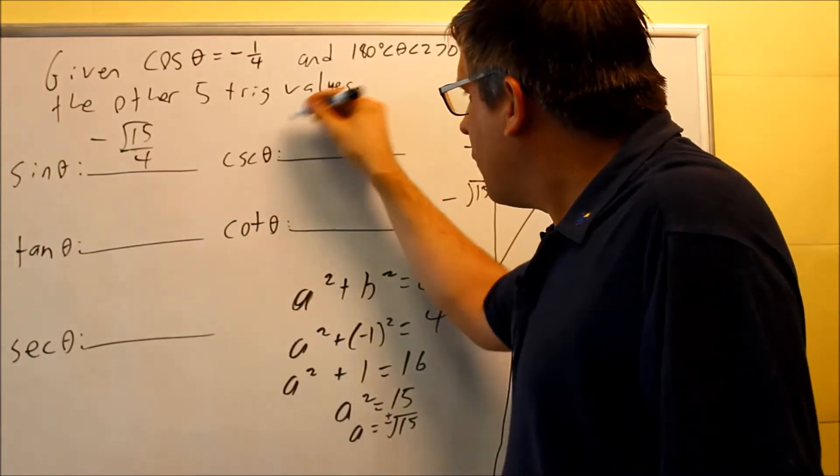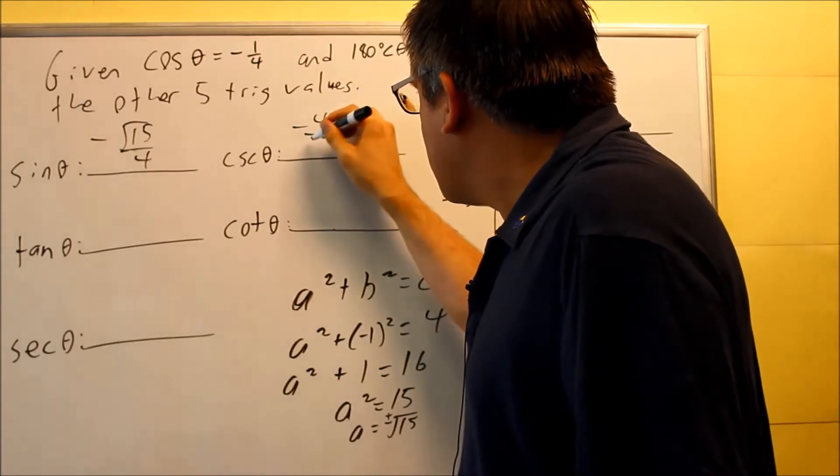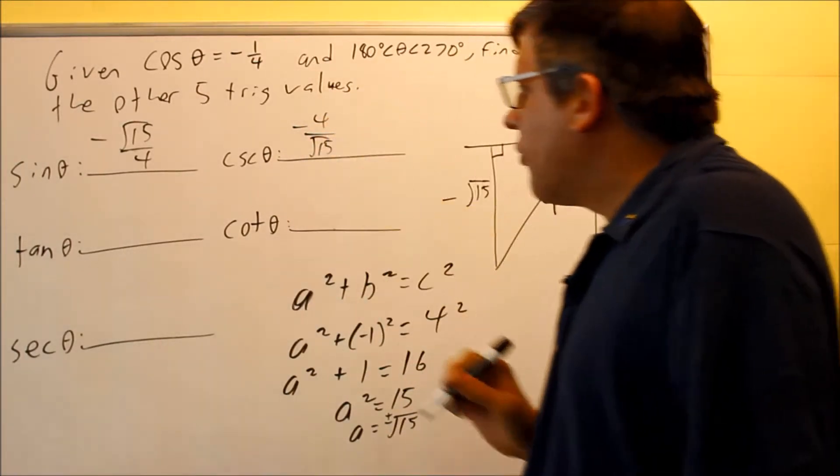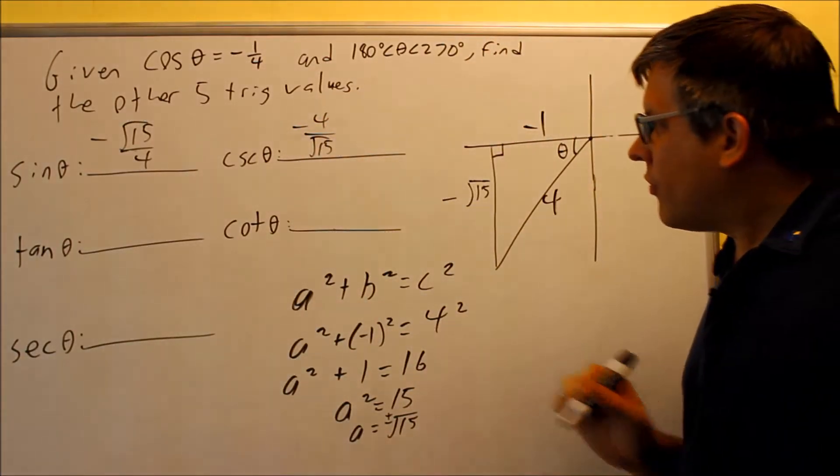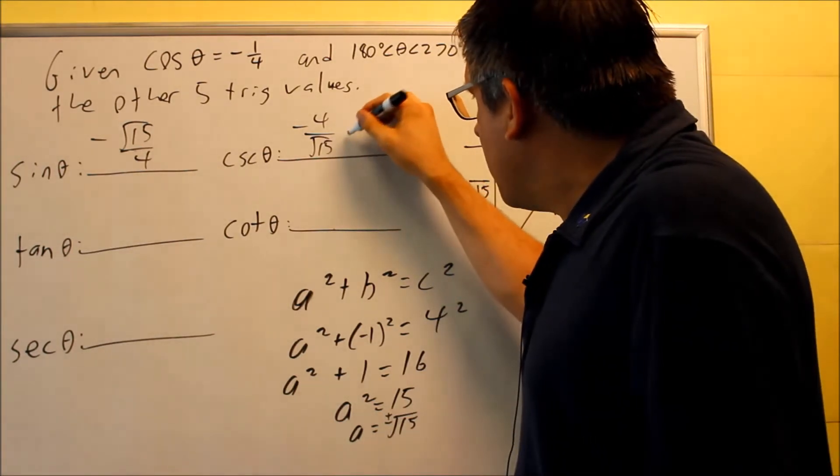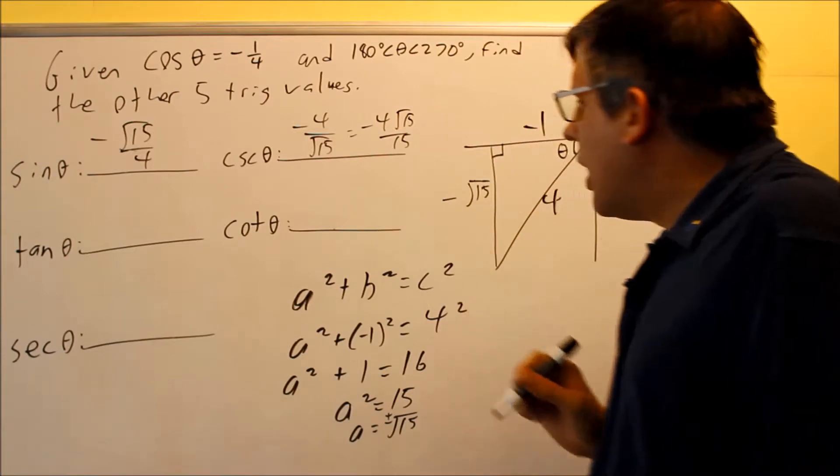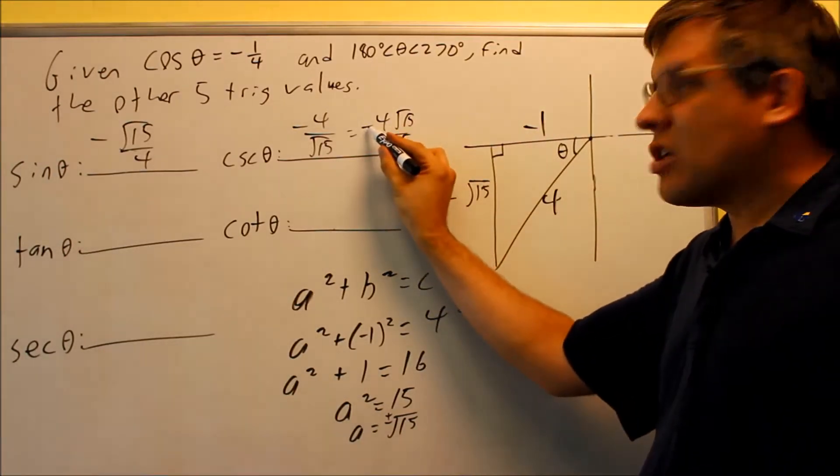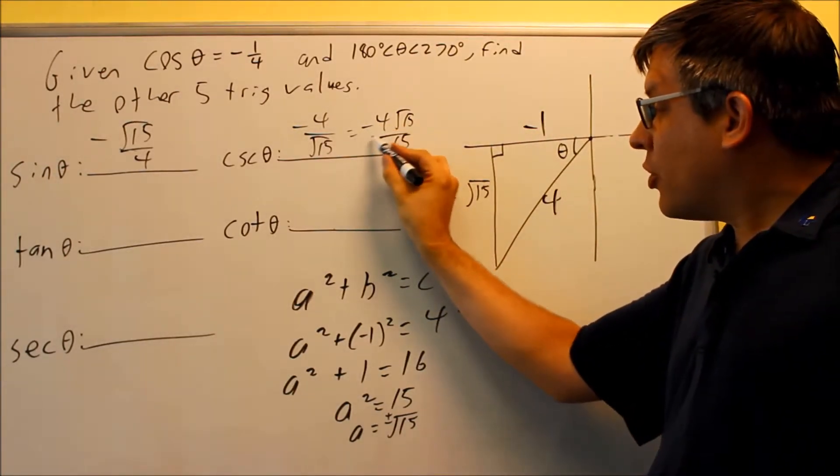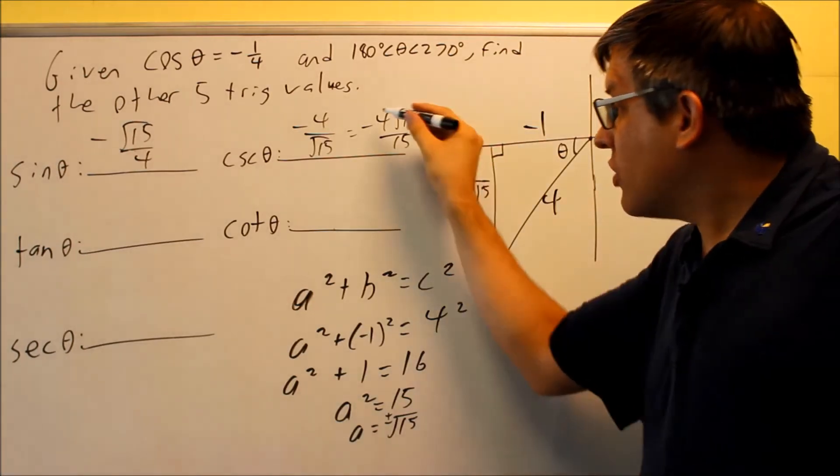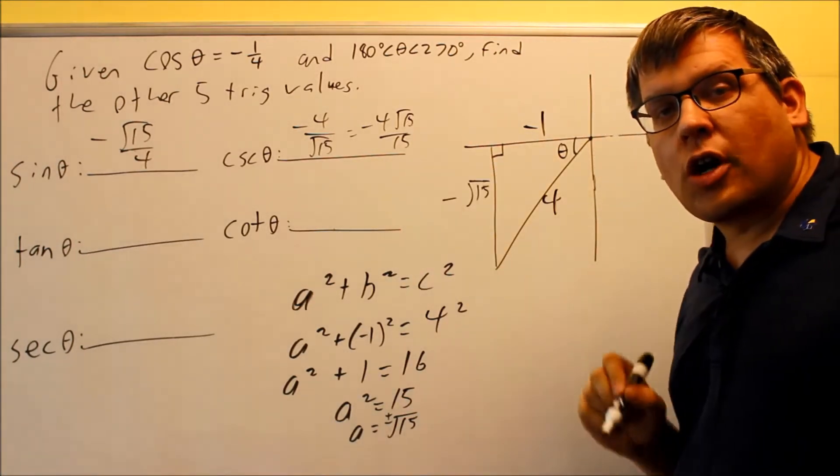We need to flip that, the reciprocal is going to be our cosecant, so we do negative four divided by radical fifteen. And then again, you want to make sure you rationalize this, negative four root fifteen over fifteen is what you get there. You can either leave the negative sign written on top or you can put it out front, it doesn't matter as long as you have a negative in there somewhere as part of your answer.